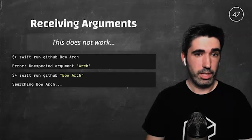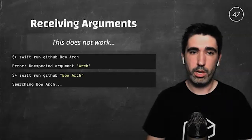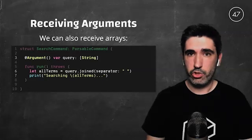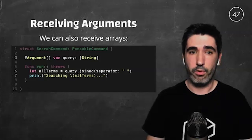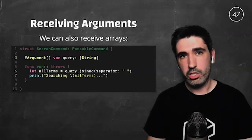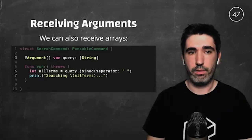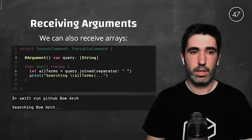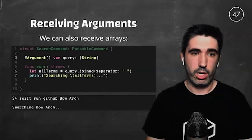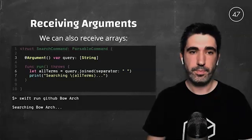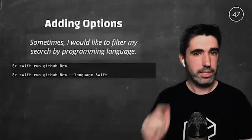By declaring the query as an array of strings, whenever we type several terms in our query, each one will be assigned to one position within the array. Then in the run method, we use the array as we normally would. If we invoke it without quotation marks, it will print 'Searching for watch.' Good — we have fixed our first problem.